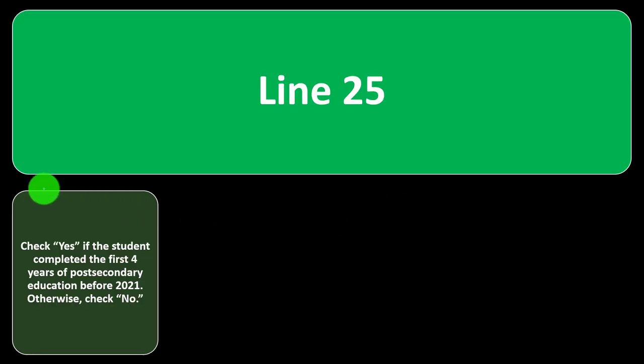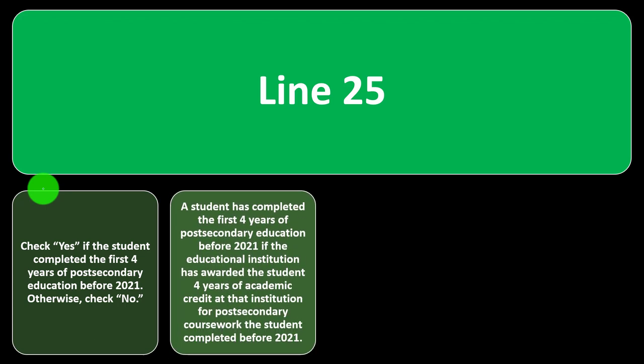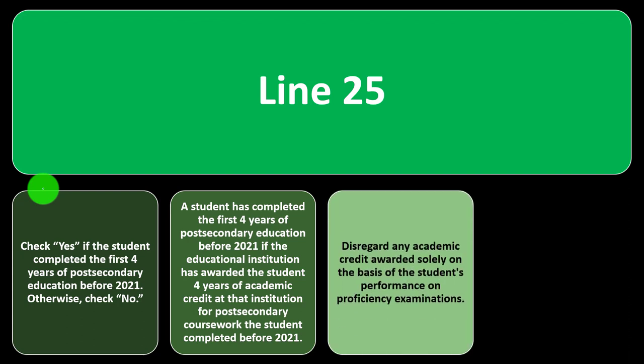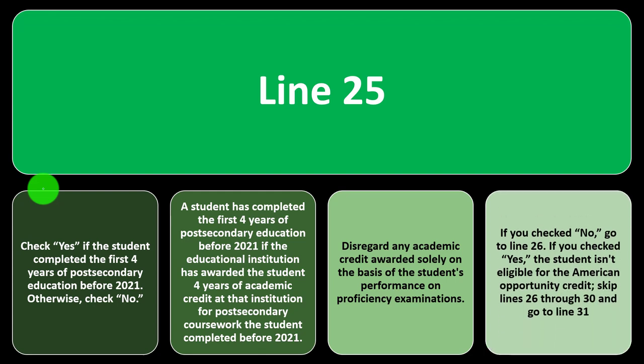Line 25: check yes if the student completed the first four years of post-secondary education before 2021 — meaning the educational institution awarded four years of academic credit for post-secondary coursework completed before 2021. Disregard any academic credit awarded solely on the basis of performance on a proficiency examination, as that doesn't count for this purpose. If you check no, go to line 26; if yes, the student isn't eligible for the American Opportunity Credit — skip to line 31.